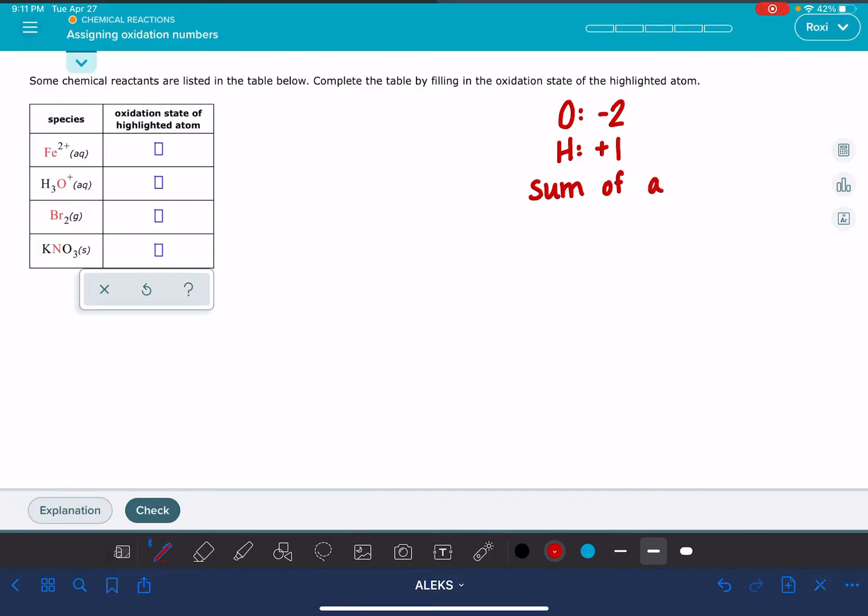And then last but not least, the sum of all the oxidation numbers, whether it's an ion, a polyatomic ion, a molecule, etc., the sum of all the oxidation numbers needs to add up to the overall or total charge of that compound, polyatomic ion, whatever it is.